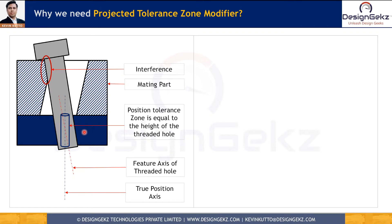Let's understand fixed fastener assembly and the possible interference problem. In a fixed fastener assembly, the upper part has a clearance hole and the lower part either has a threaded hole where the bolt will fasten the parts together, or it has an interference fit of a pin with the hole, where the pin is force-fitted into the hole. The orientation of this hole will decide the orientation of the bolt or force-fitted pin.